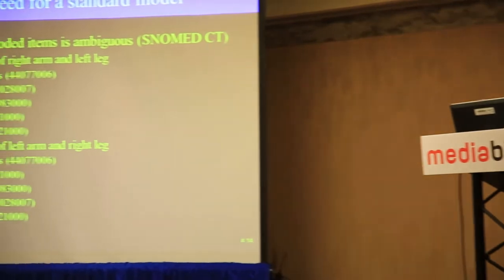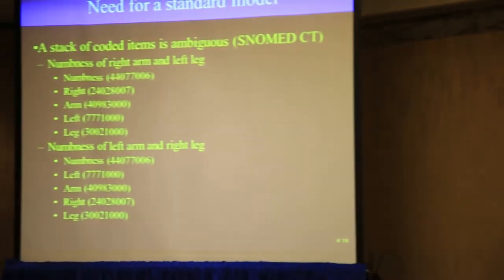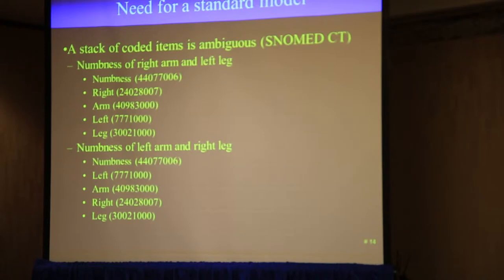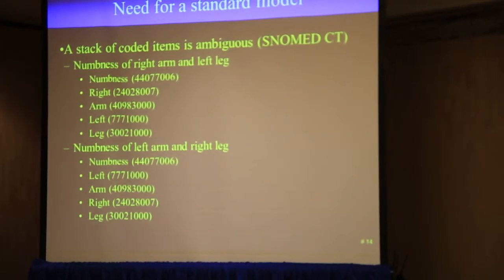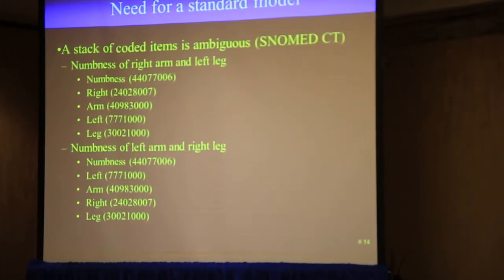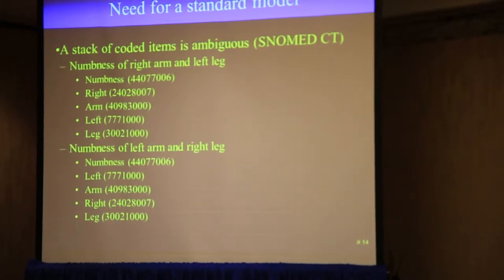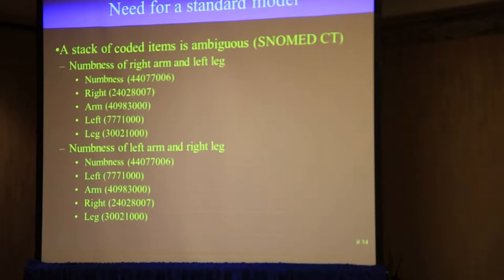If you start out with SNOMED CT, you've got codes for numbness and right and arm and leg and those kinds of things. Without any kind of structuring of the information, you can use the same codes to represent a statement where you mean numbness of the right arm and left leg, or the same codes for numbness of the left arm and right leg — which, if you're trying to do neurology things, are tremendously different findings clinically.